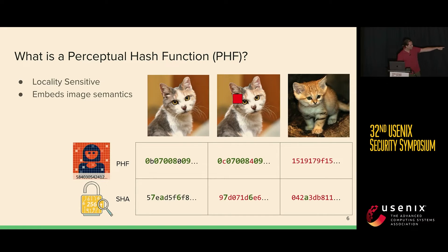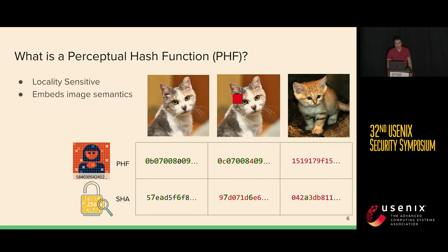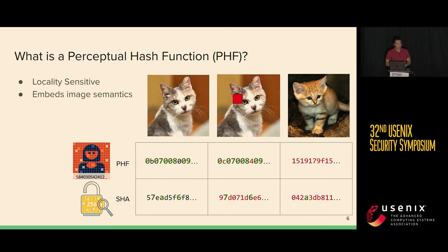If we look at the SHA-256 output, we can see that making this minor change of adding that red square drastically changes the output of the hash algorithm. This is actually a core principle of a cryptographic hash function like SHA-256.